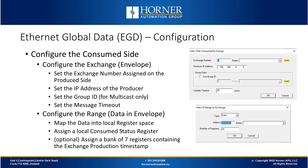Next we have to configure the consumed side of the exchange. First we must set the exchange number to match the exchange number that was assigned on the produced side. We also have to set the IP address of the producer. If it's a multicast type message to a group we also have to set the group ID matching the one on the produce side. Then we assign a message timeout — this is not the same number of milliseconds that was assigned on the produce side. Then we must configure what we'll do with the data that comes in, moving it into our local register space of the consuming OCS. It doesn't have to be the same register numbers as on the produced side. Next we'll assign a status register so we can tell if communications are working properly. And optionally you can also map in the timestamp of when that message was transmitted into a local variable.